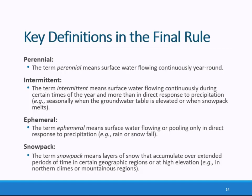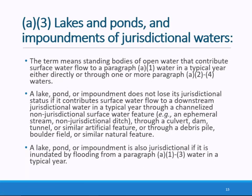Moving on to our third category: lakes and ponds and impoundments of jurisdictional waters. The agencies have created this separate jurisdictional category for standing bodies of open waters that are not themselves traditional navigable waters. This lakes, ponds, and impoundments category is similar to the tributary category — they must contribute surface water flow to a traditional navigable water or territorial sea in a typical year. Lakes, ponds, and impoundments are jurisdictional if they are upstream of a channelized non-jurisdictional feature, such as an ephemeral stream or non-jurisdictional ditch, as long as they contribute surface water flow to a downstream jurisdictional water in a typical year.